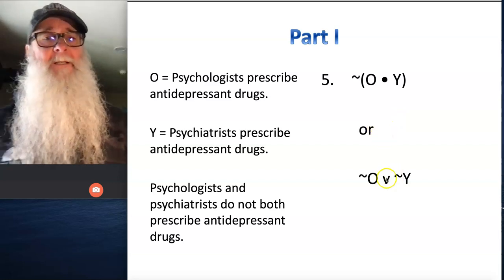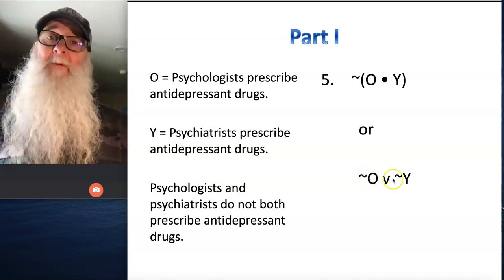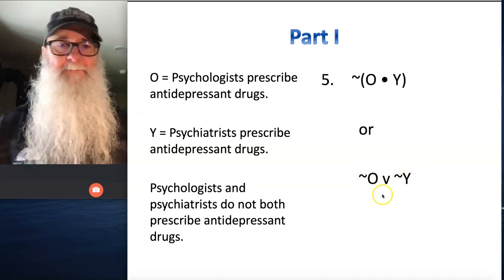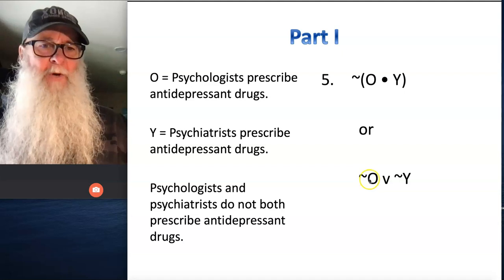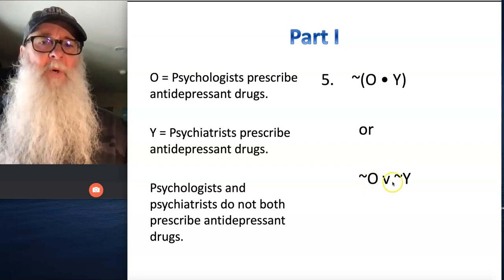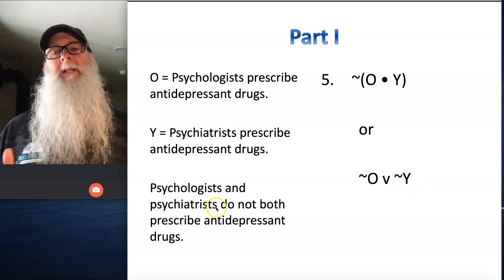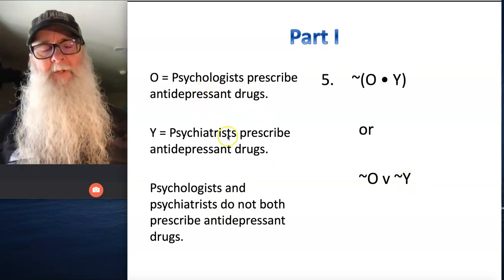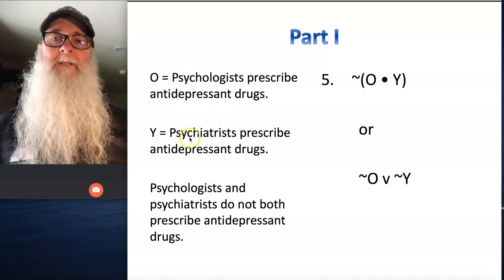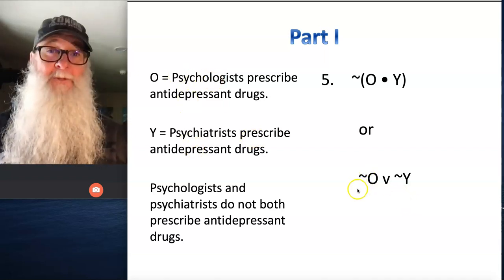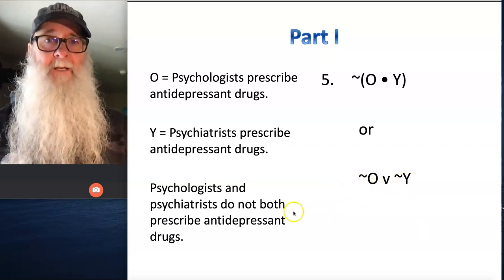The other way we could translate this is: tilde O wedge tilde Y, and the way we would read this translation is: either psychologists don't prescribe antidepressant drugs or psychiatrists don't prescribe antidepressant drugs. What we want to take note of here is that when we do these translations, we always express our proposition statements as affirmative statements, and then we use tilde to negate those statements in our symbolic representations.